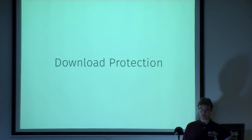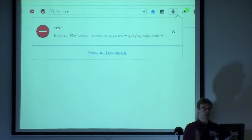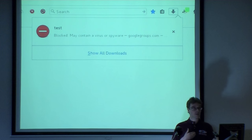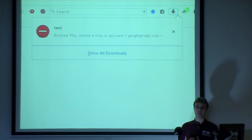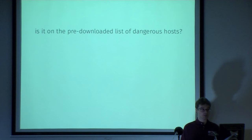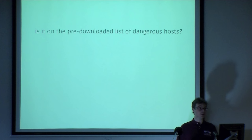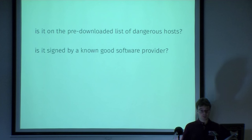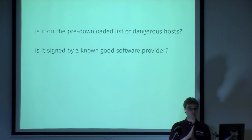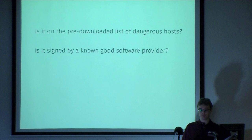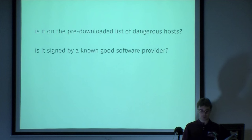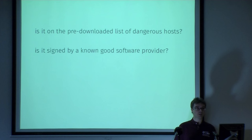There's another component of safe browsing called download protection. It happens after you download a file. We make some checks to decide whether or not to block that file, such as if it's malware. The first thing we do is a local check — we have a pre-downloaded list of dangerous hosts known to host malware. If the file you just downloaded is from one of those, we block it immediately. Another thing that happens on Windows is we try to see if the file is signed. If that download is signed by a known good software publisher like Microsoft or Adobe, we just allow it. Those two steps get rid of the vast majority of downloads.